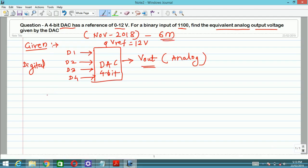You should know the formula for analog output voltage. Vout is given as V reference voltage in bracket: D1 upon 2 raise to 1 plus D2 upon 2 raise to 2 plus D3 upon 2 raise to 3 plus D4 upon 2 raise to 4.